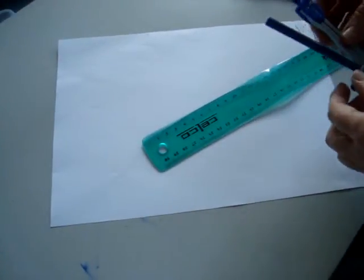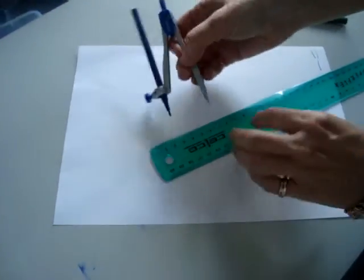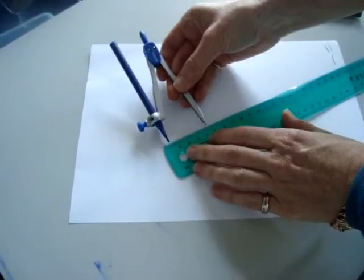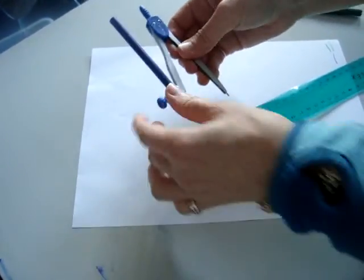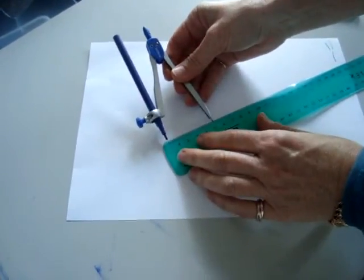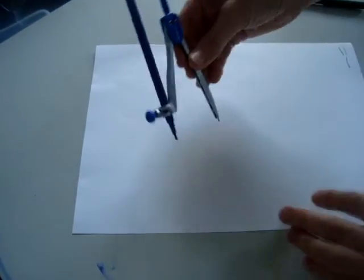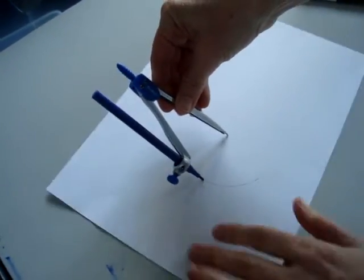Okay, so we're making a tetrahedron, and we set whatever the edge length we want. So I'm going to set it at approximately 5. And I'm going to draw my first circle.